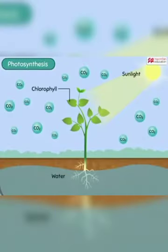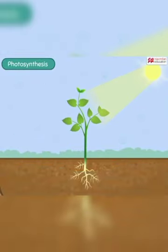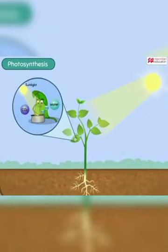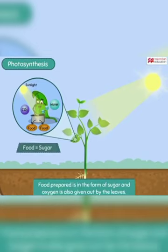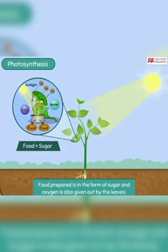And then the recipe is complete. Just like how your mother cooks food in the kitchen, the chlorophyll uses the sun's energy to combine carbon dioxide and water to prepare food for the plant. The food prepared is in the form of sugar, and oxygen is also given out by the leaves in the process.